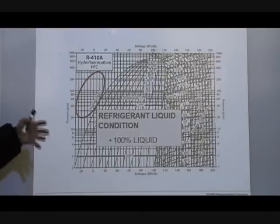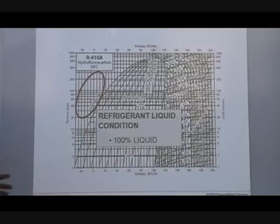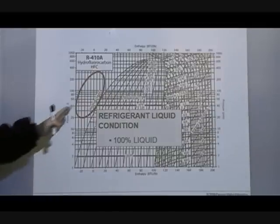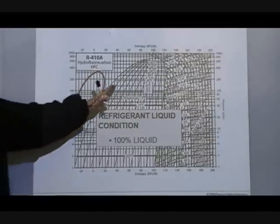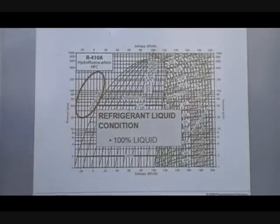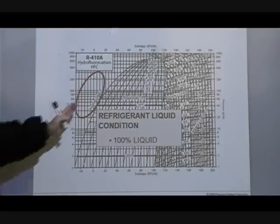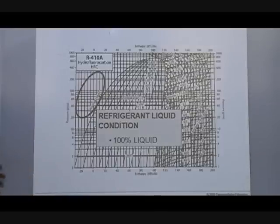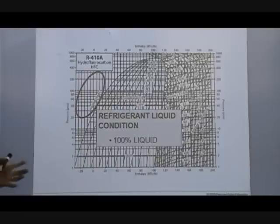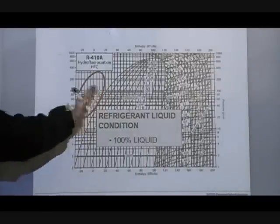Superheat: what is superheat in the refrigeration system, where does it take place, how do you measure it, why is it important? The saturated liquid is the point in the system where you've got 100 percent liquid. All the vapor that's going to condense has condensed and you've got no more heat to be rejected in the form of latent heat. Latent heat is a really powerful force that occurs when the refrigerant is changing states — from vapor to liquid in the condenser side.